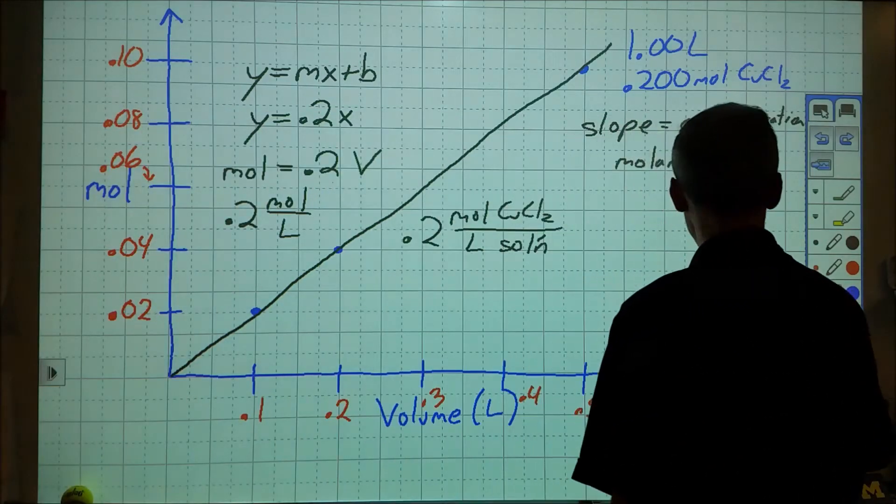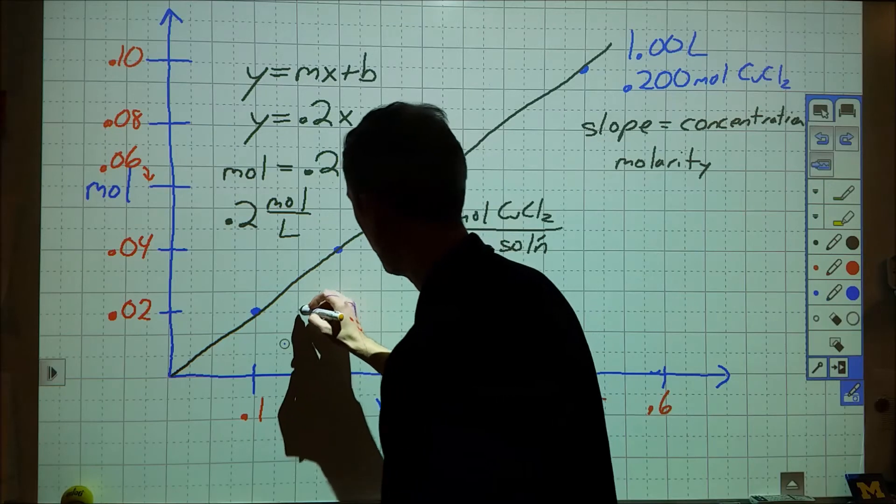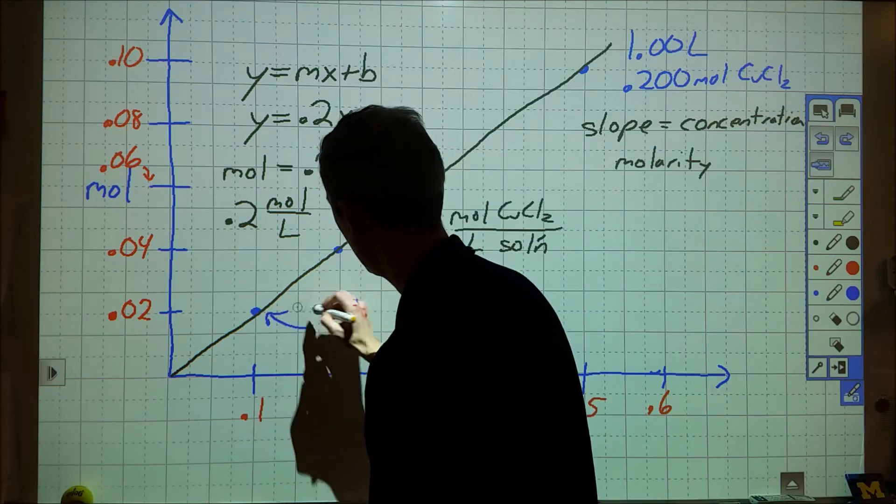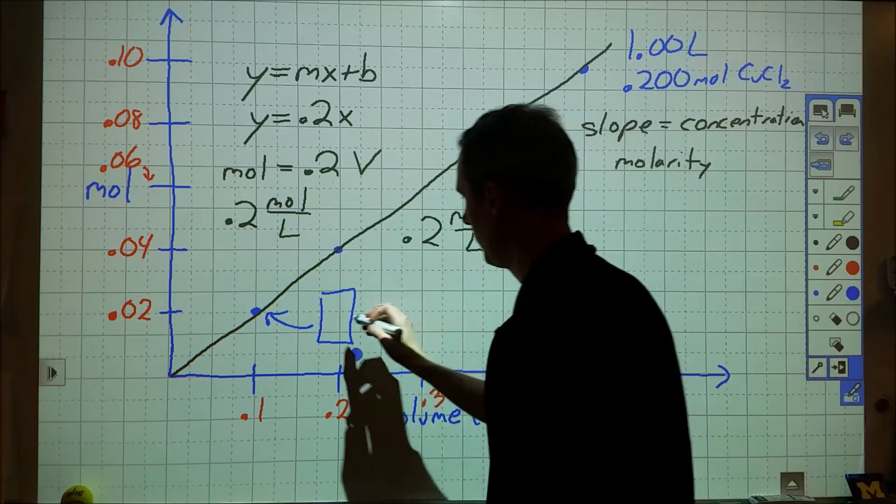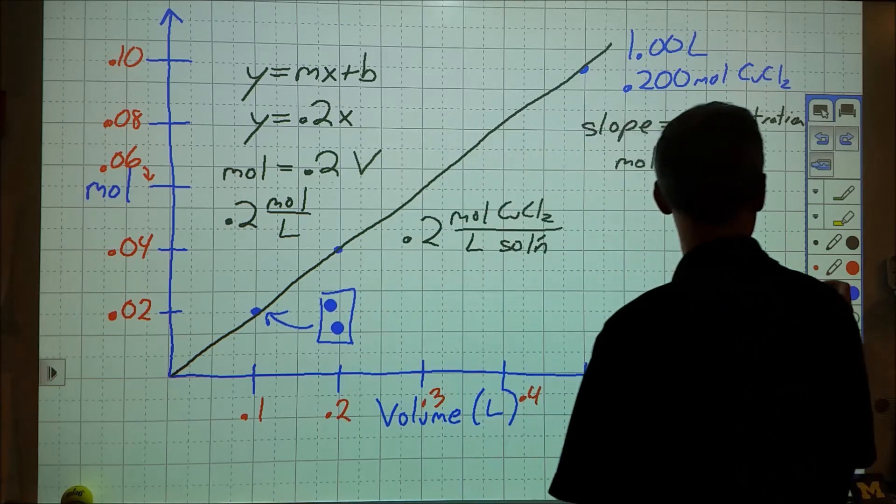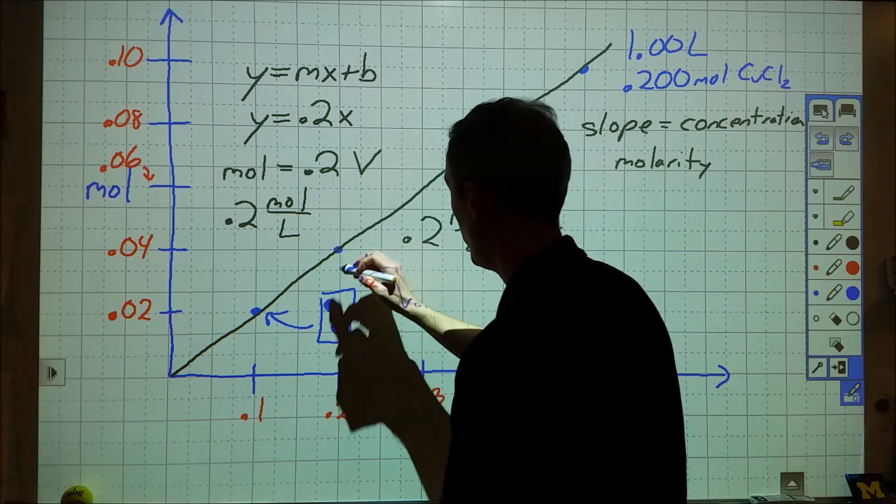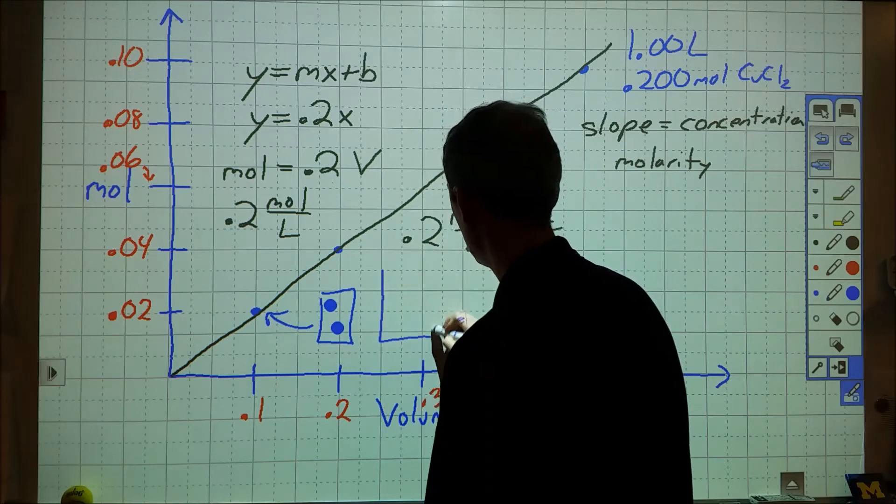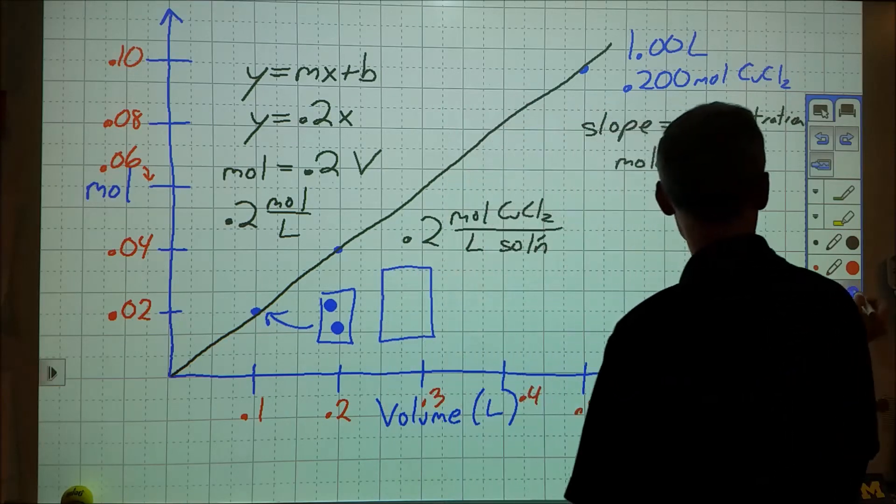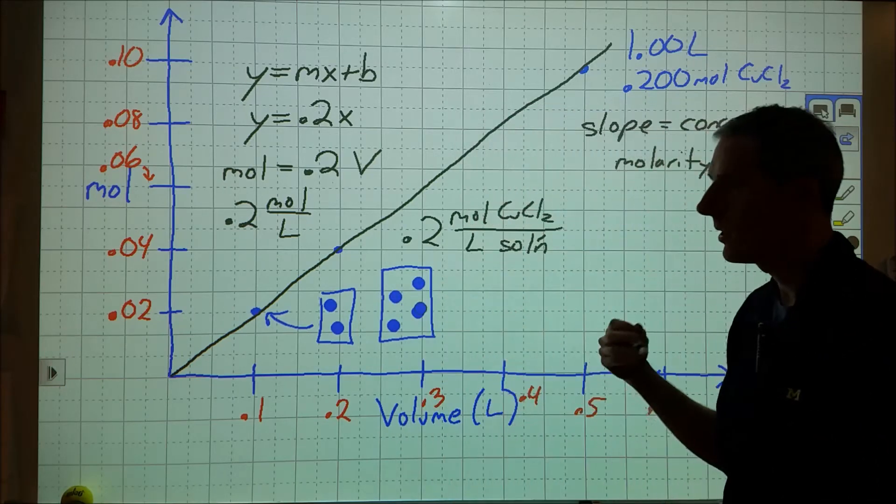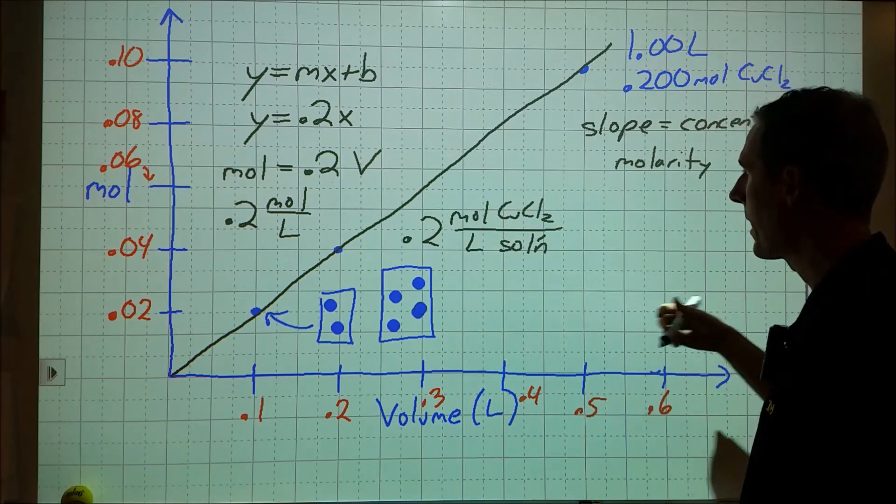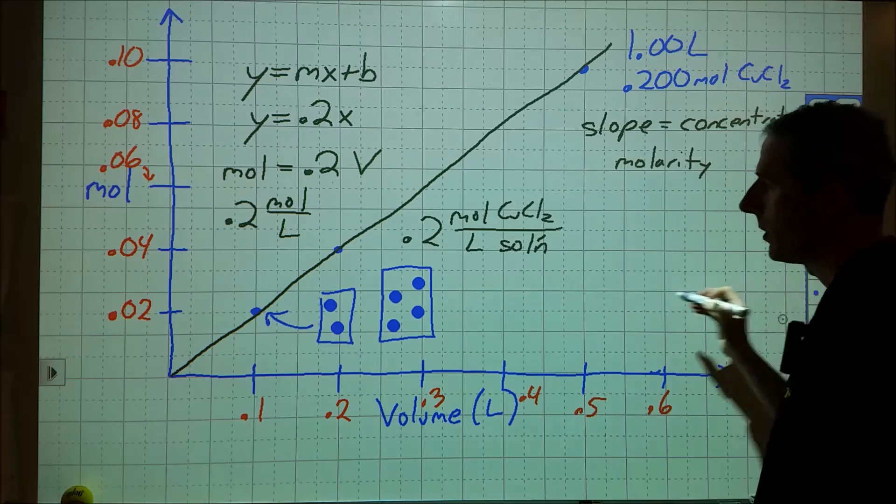If we look at what a particle diagram representation of each of these things looks like, here we have our 100 milliliter container, and it's got some particles in it. In our next container, we have twice as big of a container, and we have twice as many particles. So the spacing between these, the concentration, the ratio of the amount to the total volume, remains constant.